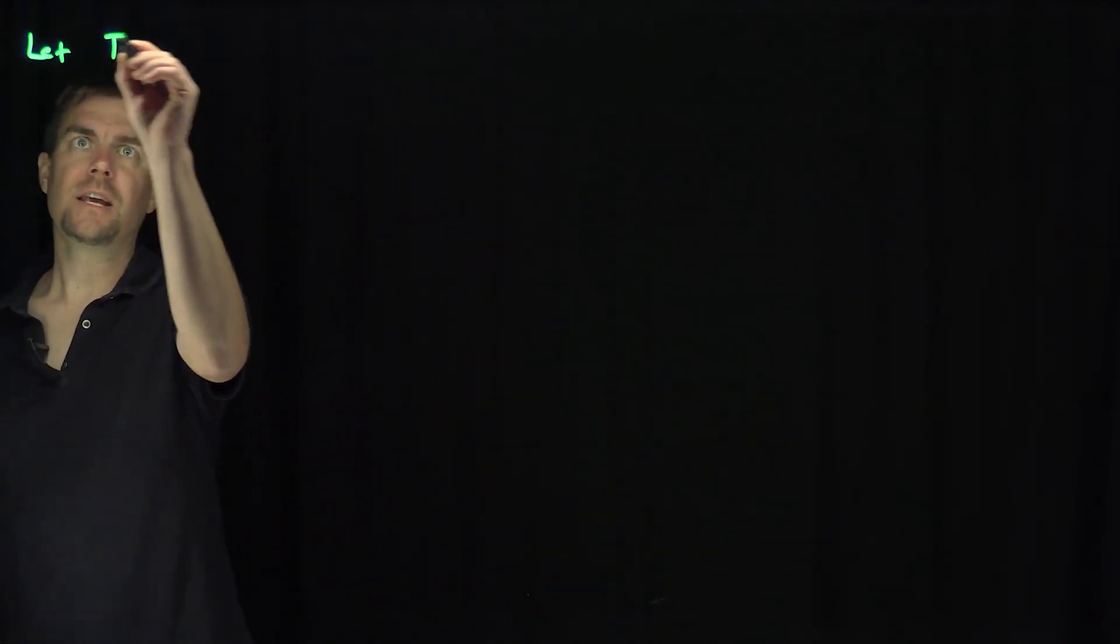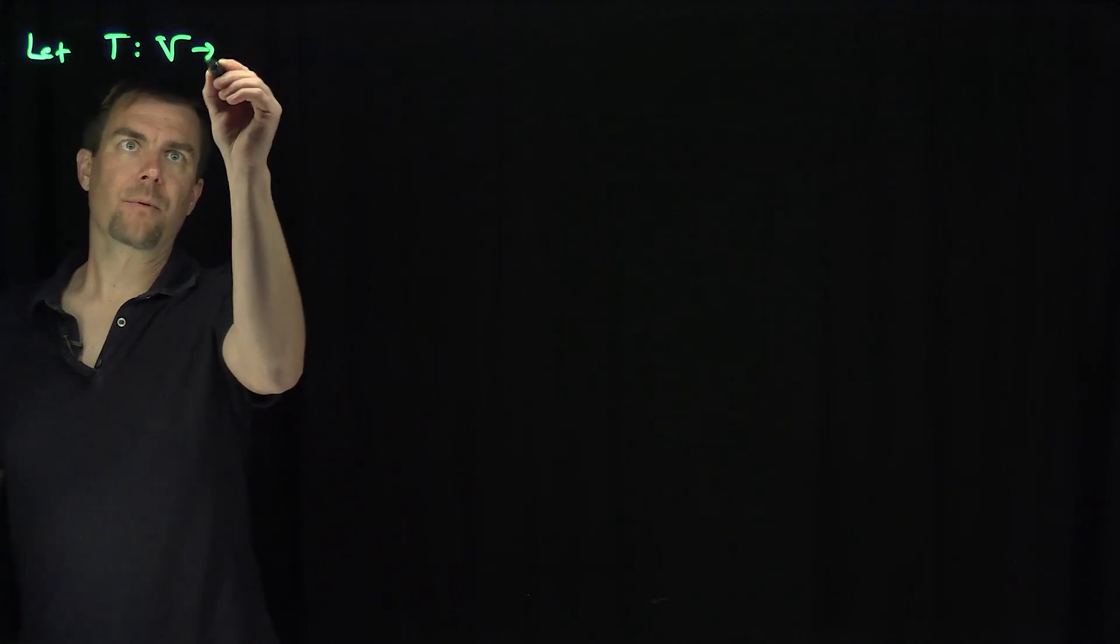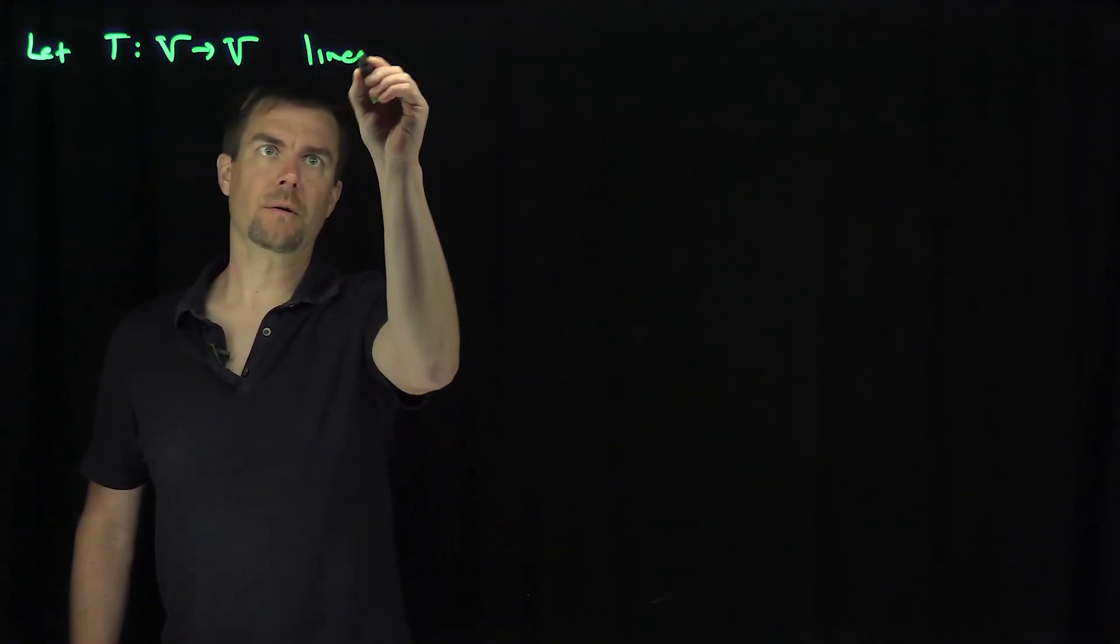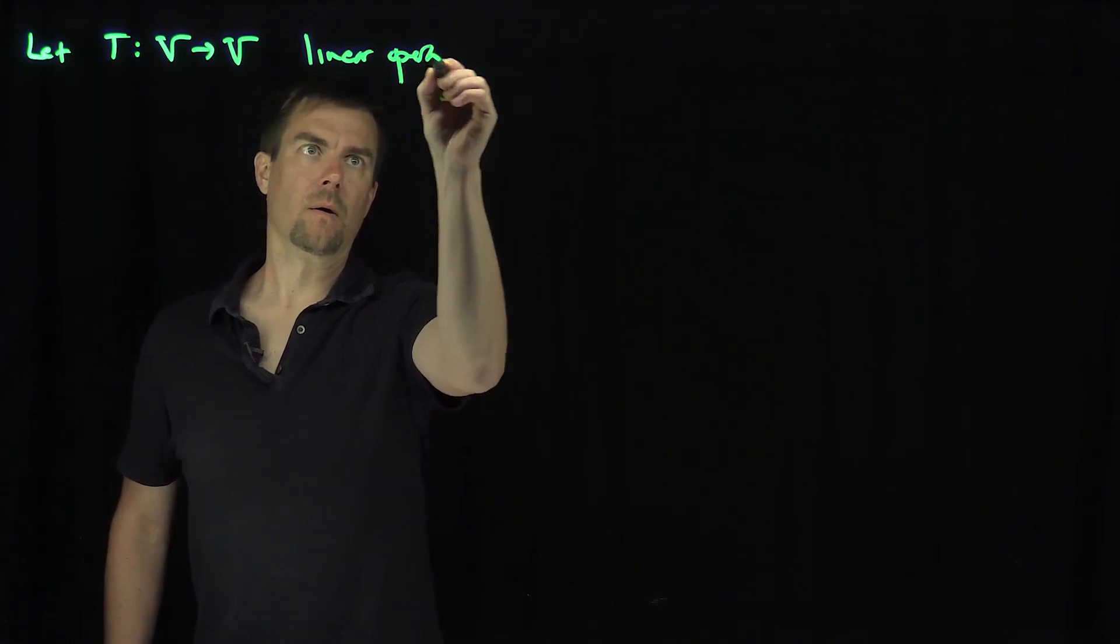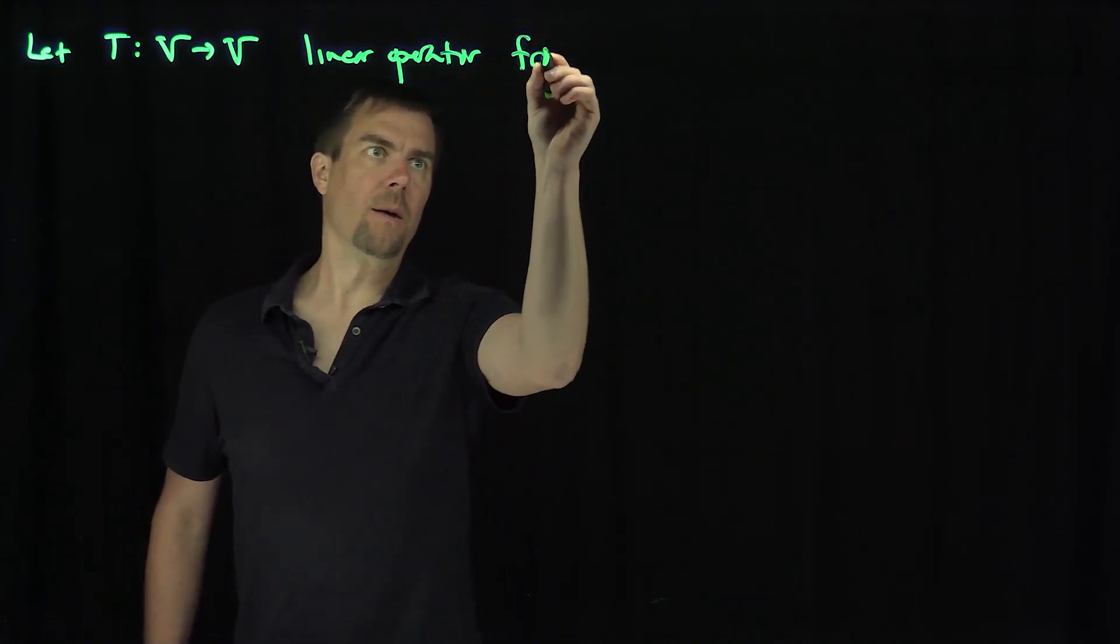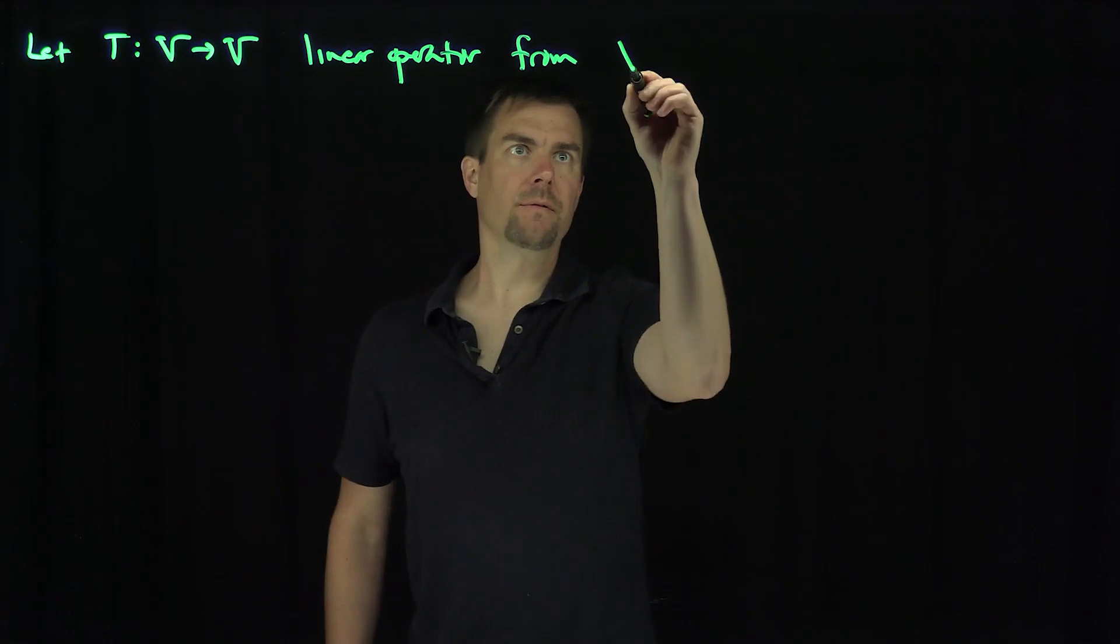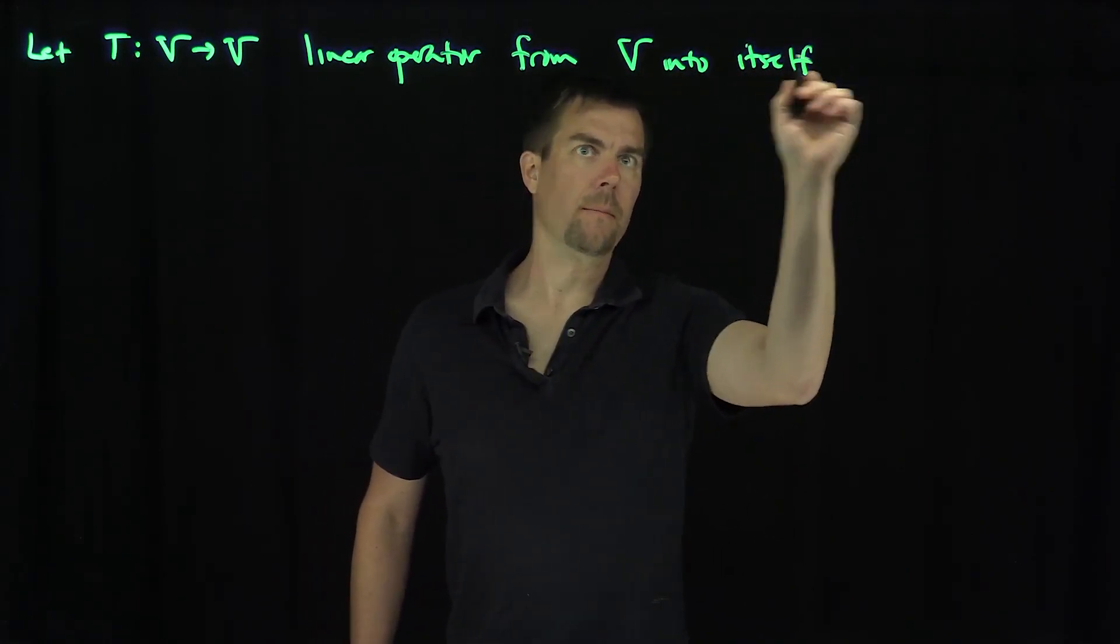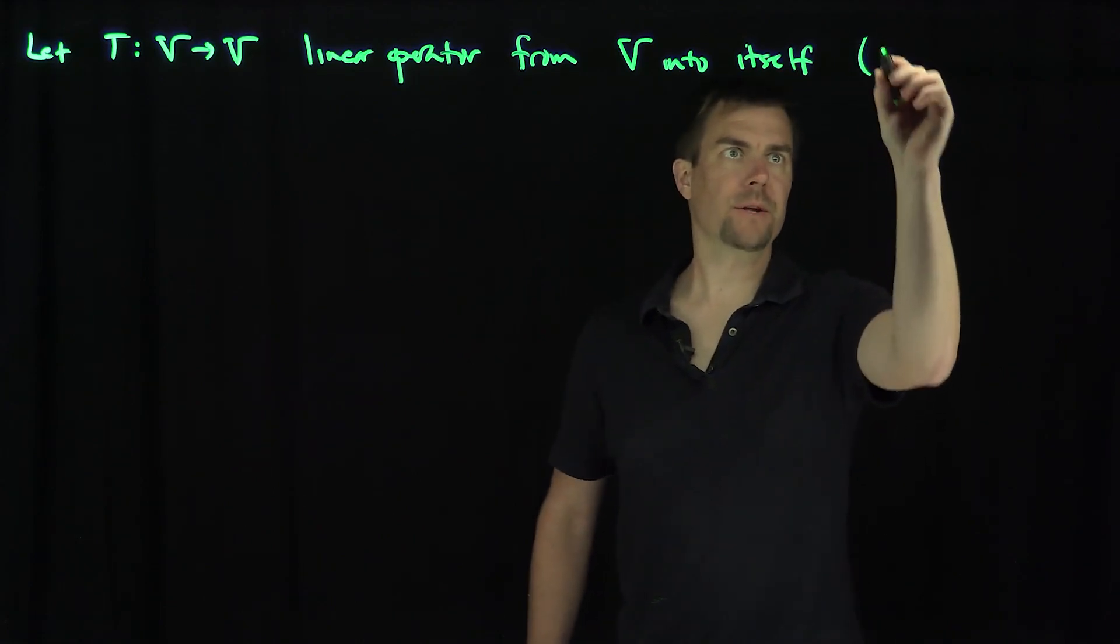Let's let T be a linear operator from a vector space V to a vector space V. So this is a linear operator from V into itself. Here, of course, V is a vector space.